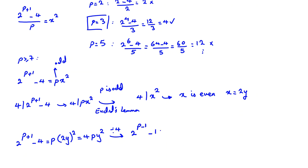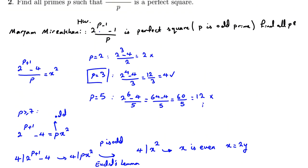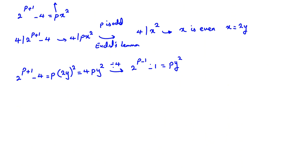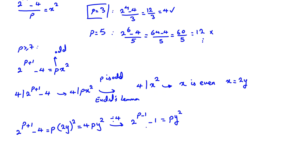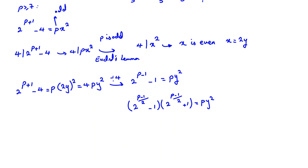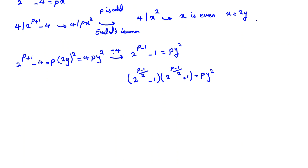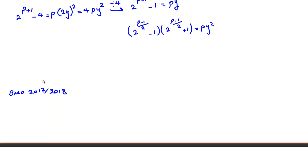From here it's exactly the same as the previous problem: (2^(p-1) - 1) / p. We factorize the left-hand side — since p is at least 7, p - 1 is even — as (2^((p-1)/2) - 1)(2^((p-1)/2) + 1) = py². This idea is also useful in BMO — British Mathematical Olympiad Round 2, around 2017–2018 — where the exact same idea appears.